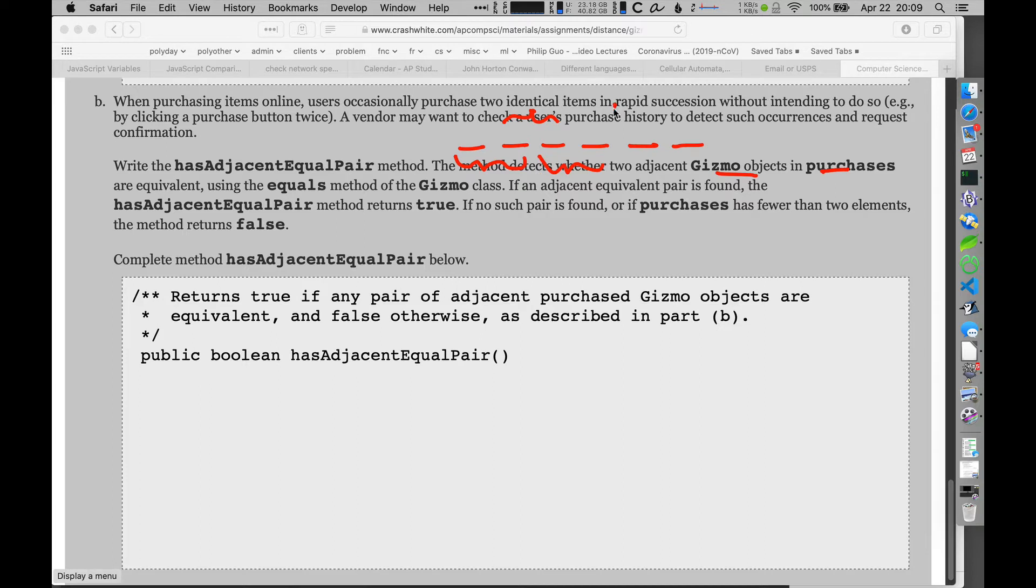So we'll just keep on moving through the list, and if ever any of these are the same gizmo, we're gonna send back true. Otherwise, if we get to the end of the list and we don't have any adjacent pairs, we're gonna return false.